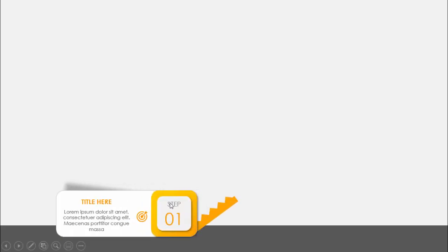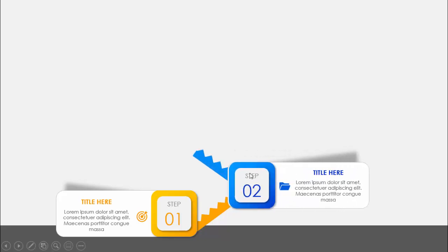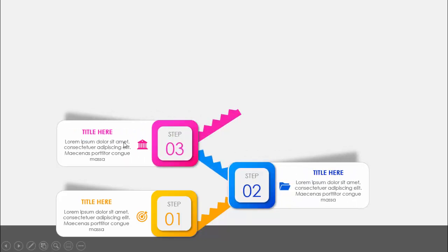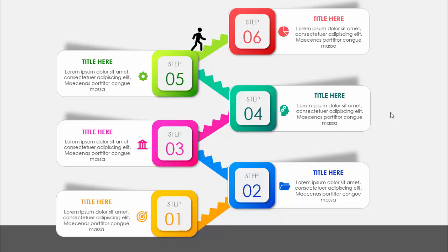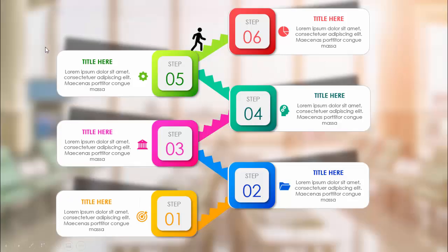In today's tutorial I'm going to show you how to create a six-steps with states infographic slide in PowerPoint. When I click, the first option comes — step one — where you can add a title along with detailed text and an icon. I've added a shadow effect and a stair going to step two, step three, and so on, using different color combinations with gradient fill for steps four, five, and six.